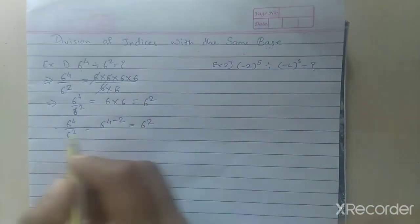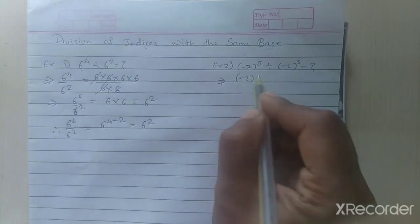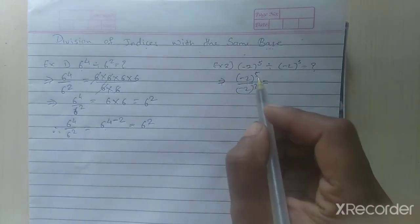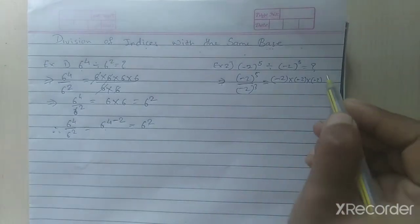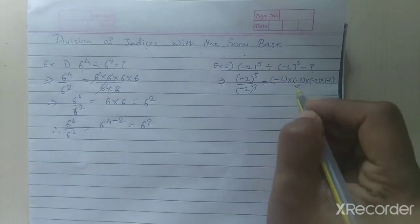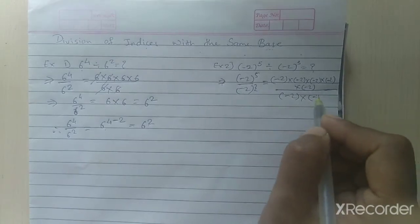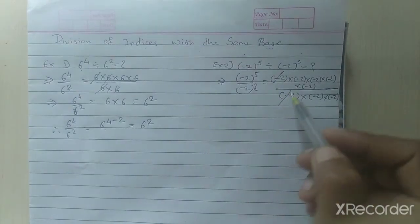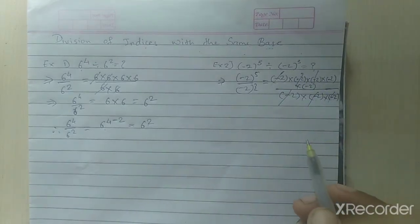Now let's solve example 2: minus 2 raised to 5 divided by minus 2 raised to 3. How many times does minus 2 appear in the numerator? 5 times. So we write minus 2 multiplied 5 times. In the denominator, we write minus 2 multiplied 3 times: minus 2 × minus 2 × minus 2. Now we cancel: one minus 2, two minus 2, three minus 2 cancel from both numerator and denominator.